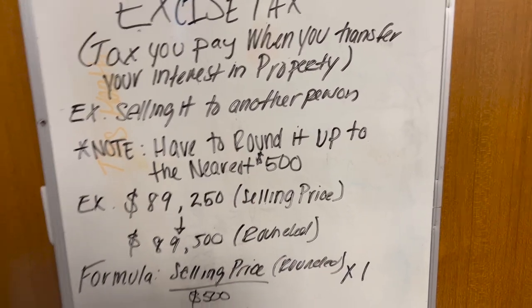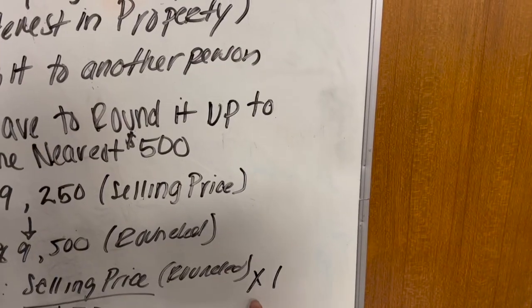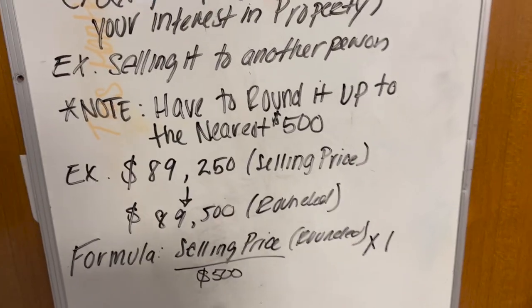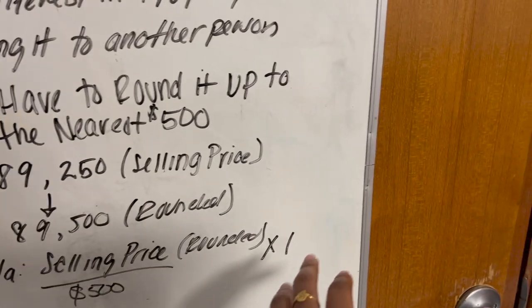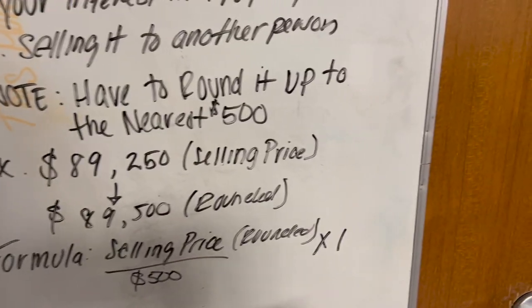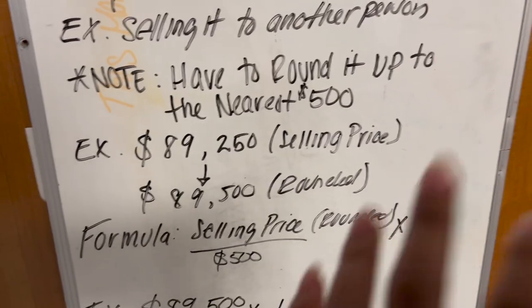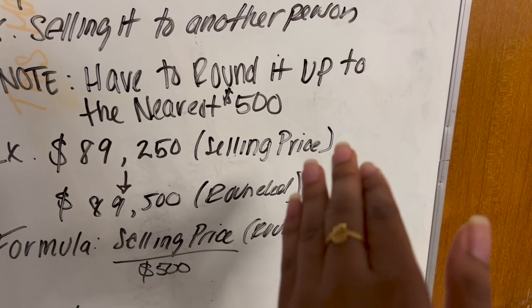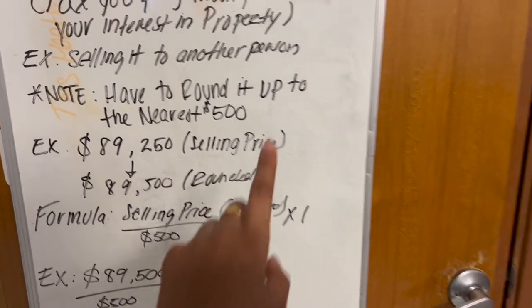The formula for this tax is: rounded selling price divided by 500, then multiplied by 1. I understand a lot of people are going to say you'll get the same number, but that's the best practice — multiplying by 1 is part of the formula, because the answer could come out different if you don't follow it exactly. So just keep to best practice and do what the formula requires.